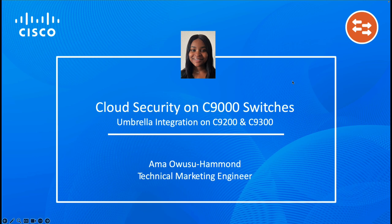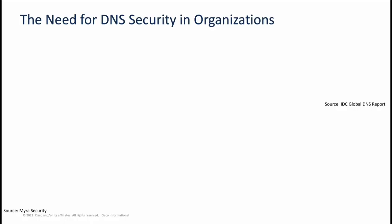Hello everyone, thanks for joining this video. This will be focused on cloud security on our Catalyst 9000 switches, specifically the Umbrella integration on our Catalyst 9200 and our Catalyst 9300 switches. My name is Alma Hammond and I'll be going through what Cisco Umbrella is, why we need it in our networks, and also the workflow of configuring it to use on DNAC.